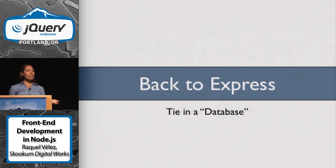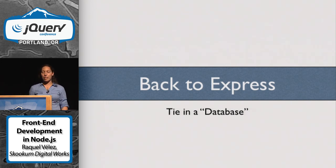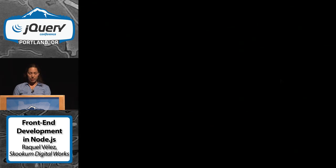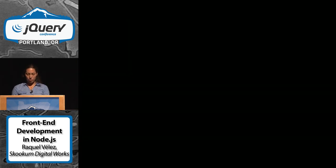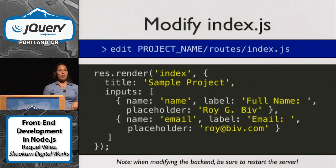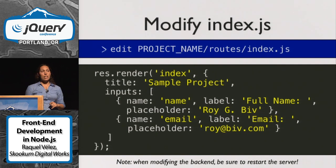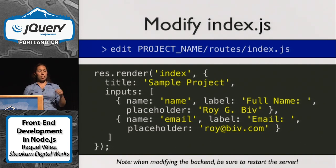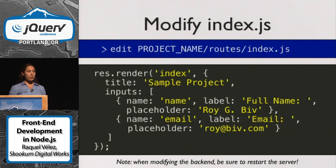Now let's make it a little bit more complicated. What if we have a database? I'm not going to actually serve up a database right now, but hypothetically, let's say we wanted to start going into the actual server side of things. We're going to modify index.js, which is the controller that handles when somebody goes to our localhost slash — that routes all the way through to the index controller. That's where we say, 'Now render this page and put in this information.'